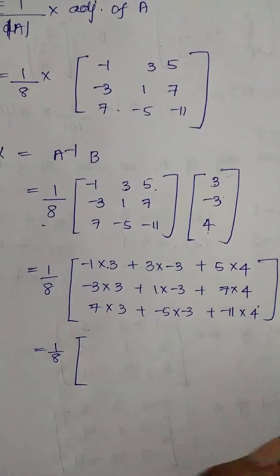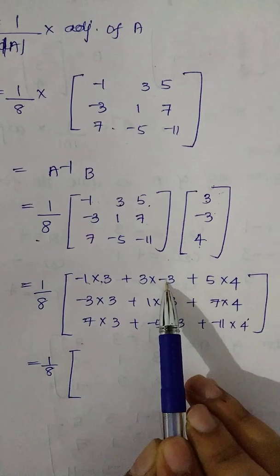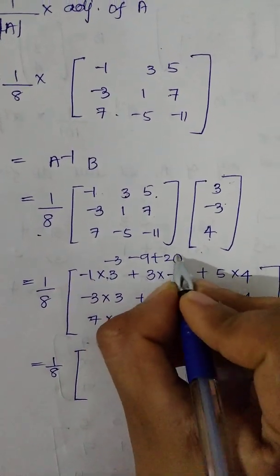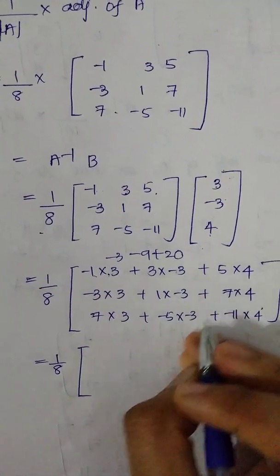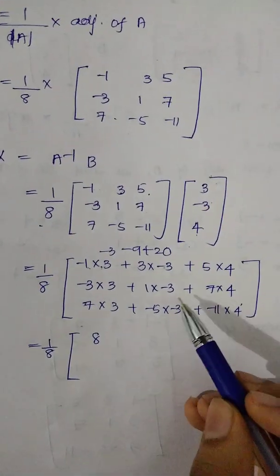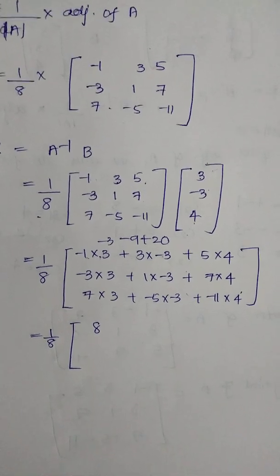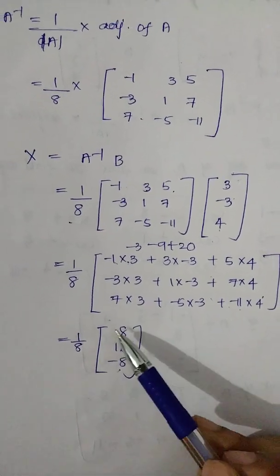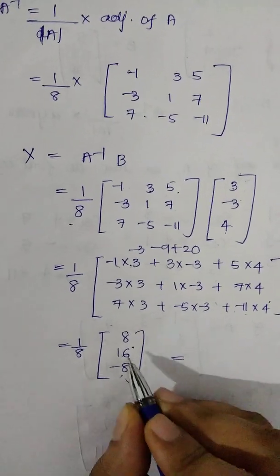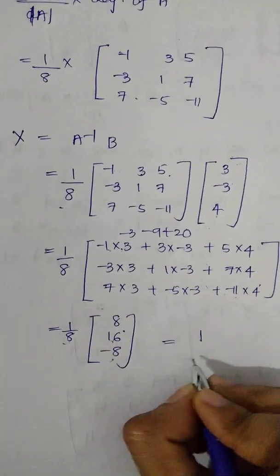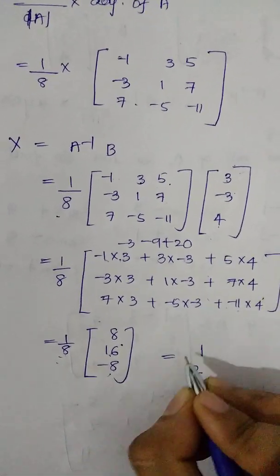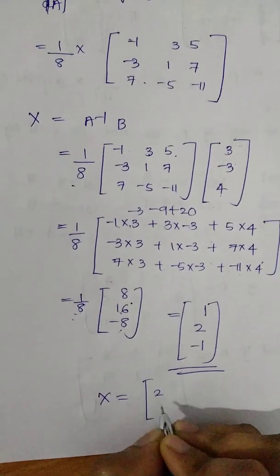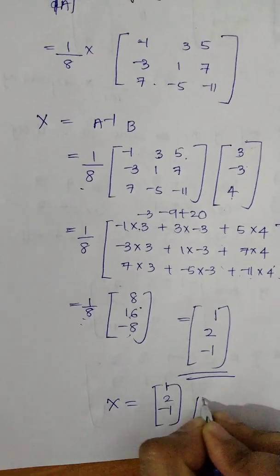I will solve it: minus 1 into 3 is minus 3, plus 3 into minus 3 is minus 9, here is 20. Now 20 minus 12, here is 8. The answer: 8 by 8 is 1, 16 by 8 is 2, minus 8 divided by 8 is minus 1. So x equals 1, 2, minus 1 — this is the solution.